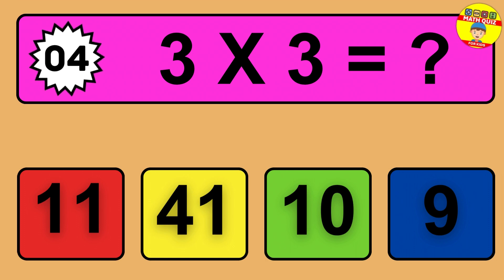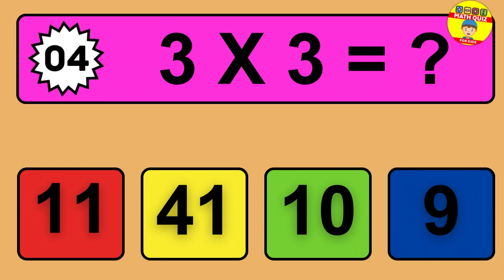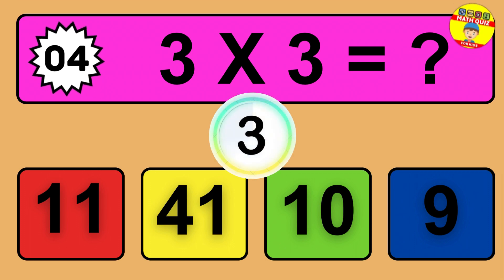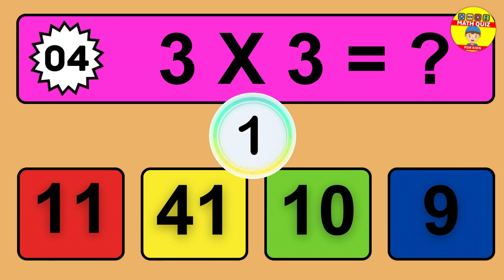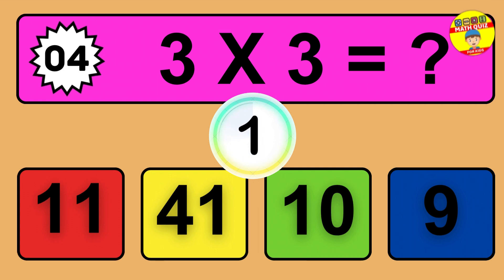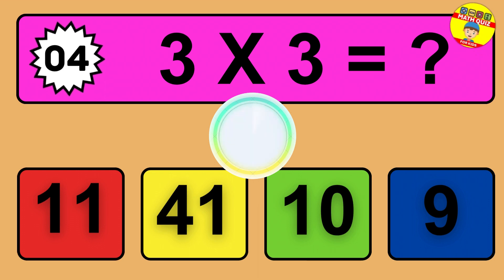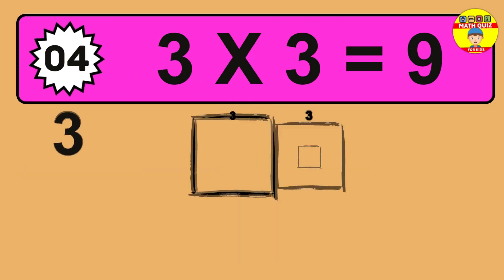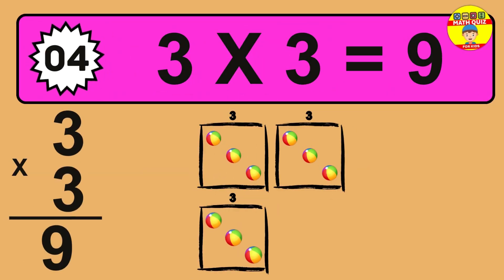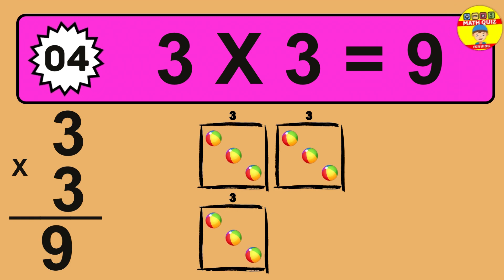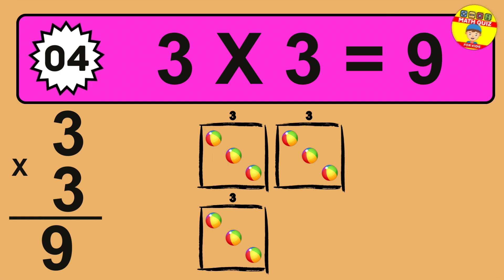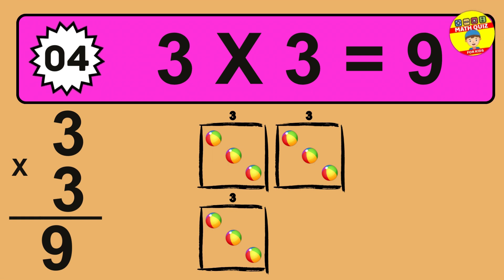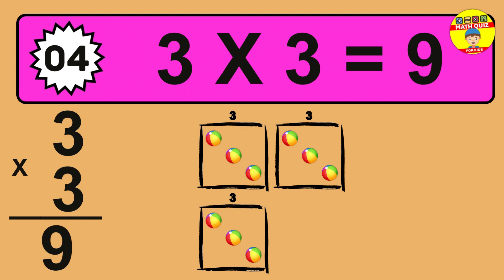Question 4. 3 times 3 equals what? The answer is 3 times 3 is 9. To calculate, we have 3 groups with 3 balls each one. So how many balls do we have? 9 balls.